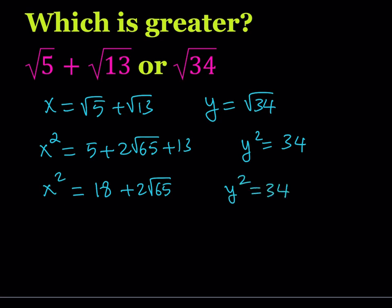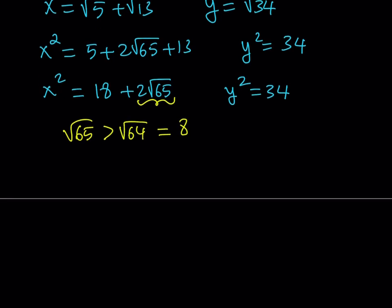Now how do you compare these two numbers? Here's what I want you to notice. We have 2 times the square root of 65. 65 is close to 64. So I can compare it to 64. Square root of 65 is obviously greater than square root of 64, which is equal to 8.